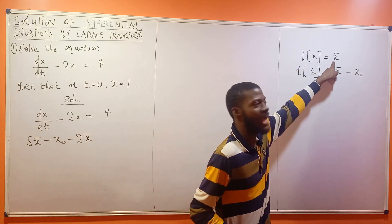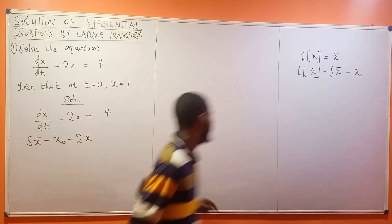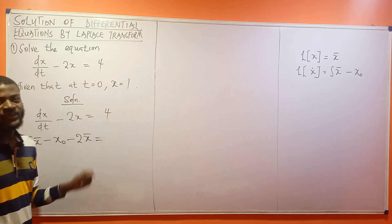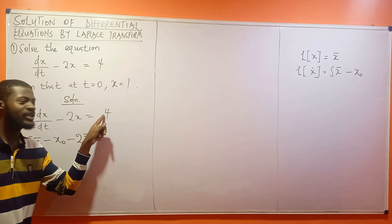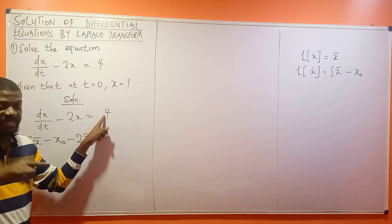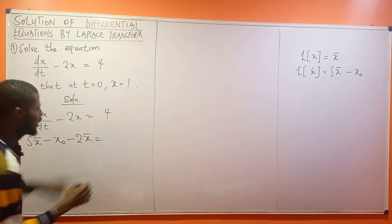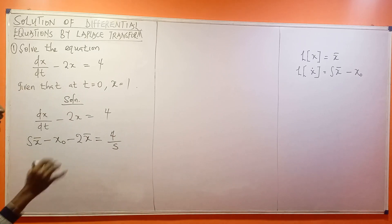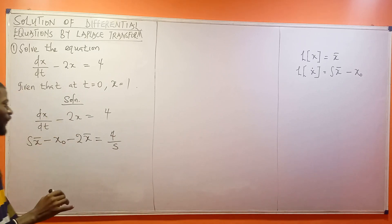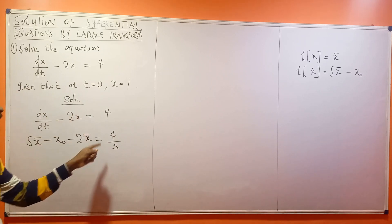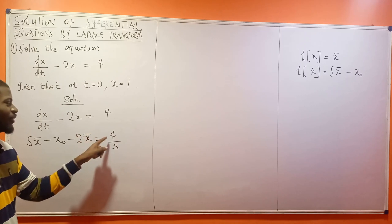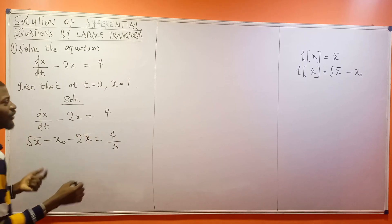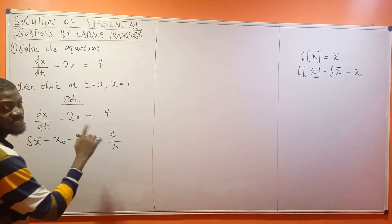Remember, the Laplace transform of S gives you S bar. Then this 4 — this is a constant. When you take the Laplace transform of a constant, it's 4 over S. Please remember to watch my first video on Laplace transforms. Whenever you take a Laplace transform of a constant, your result is the constant over S.